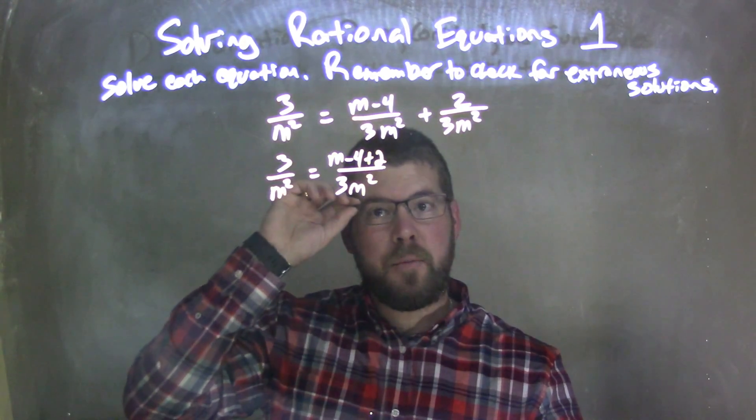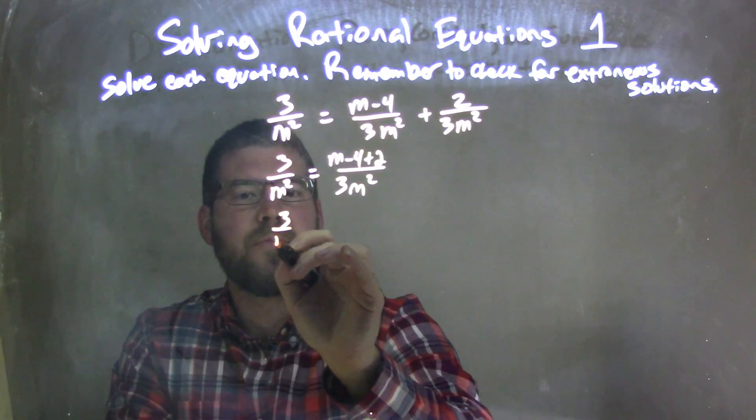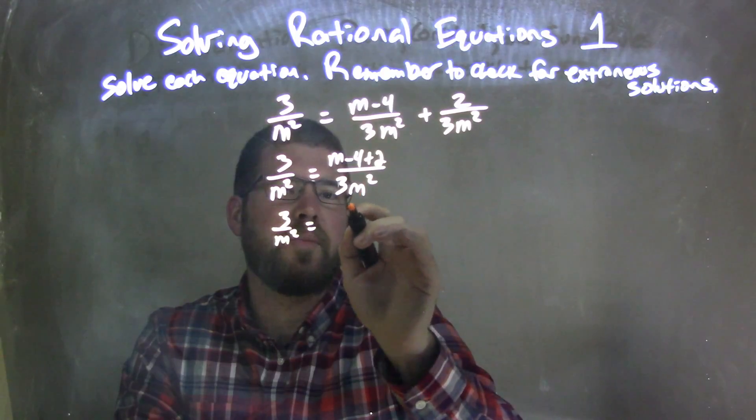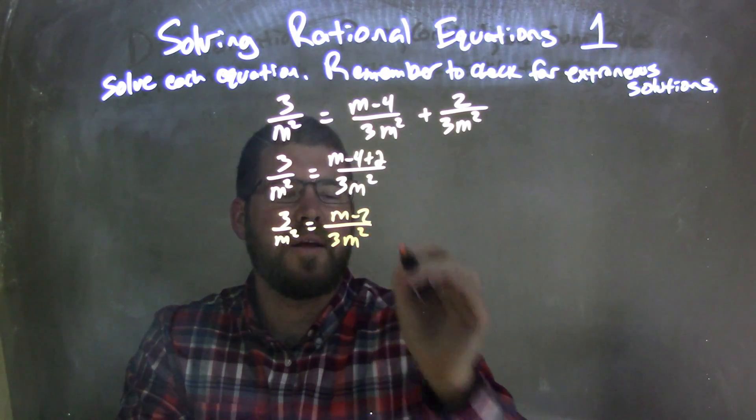Now we can simplify that. 3 over m squared here equals minus 4 plus 2, which is minus 2. So I'm going to say m minus 2 over 3m squared here.